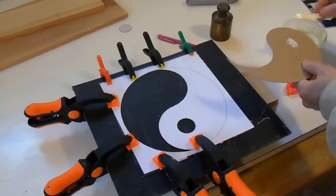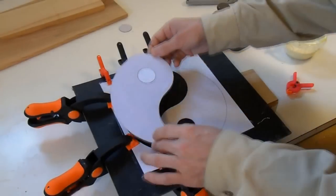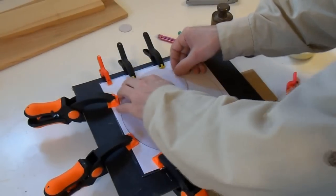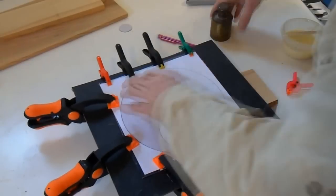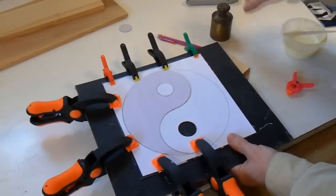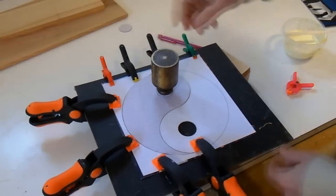I need that circle that goes in the middle of the yin-yang to be in exactly the right place. I'm using the part that I just cut out to help position that circle exactly where it needs to go. If it's not in the right place, the inlay that I'm going to carve is just not going to fit.